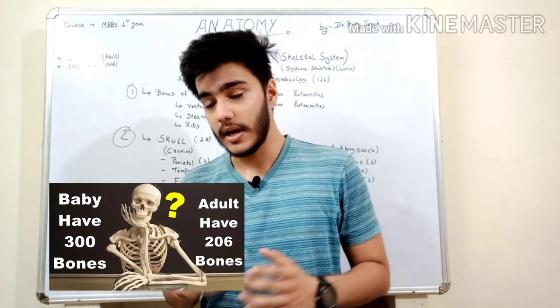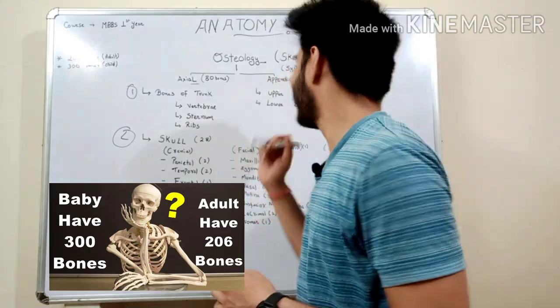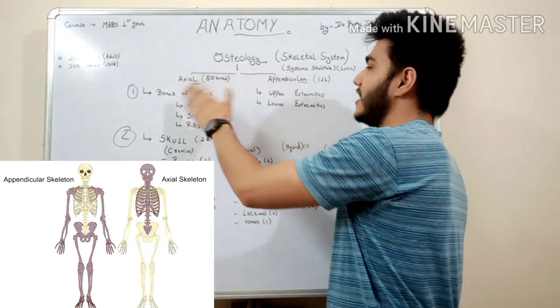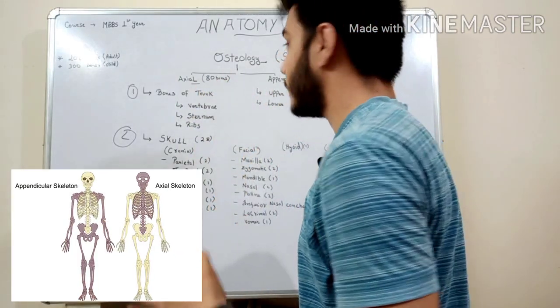And a child consists of 300 bones. So osteology is subdivided into axial and appendicular. Axial consists of 80 bones and appendicular consists of 126 bones.